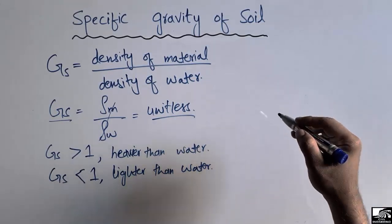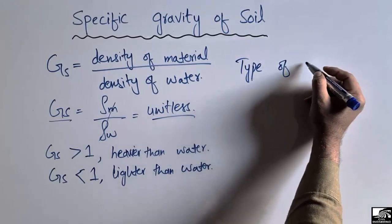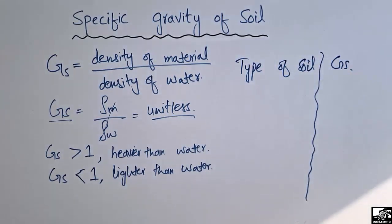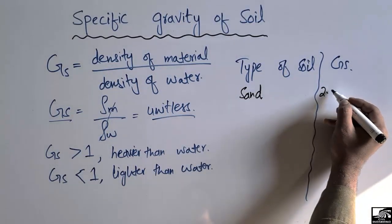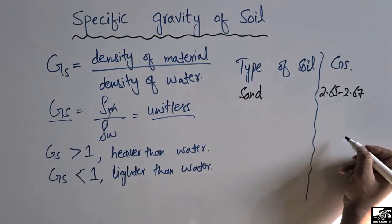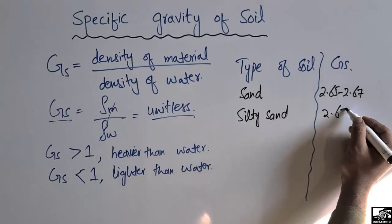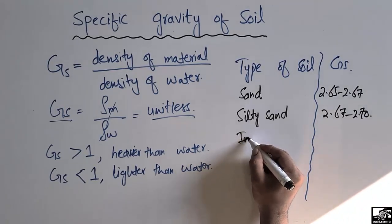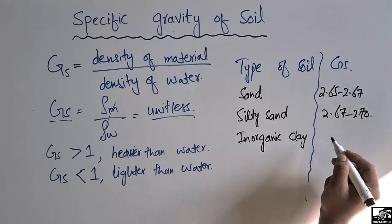Now let's look at different types of soil and their specific gravity values. For sand, the specific gravity is mostly in the range of 2.60 to 2.65. For silty sand, the specific gravity is mostly in the range of 2.67 to 2.70. For inorganic clay, the specific gravity is in the range of 2.70 to 2.80.